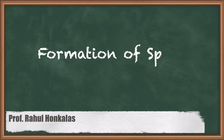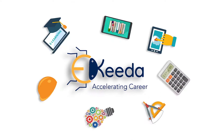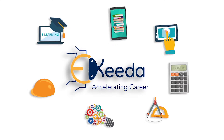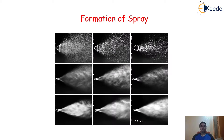Dear friends, today we are going to discuss the formation of spray. In the last video, we discussed about the nozzle and the different types of nozzle. We came to know there are different types like single hole, multi hole, pintle and pintox. In every case, the fuel is injected inside the engine cylinder through the injector nozzle and it comes in the form of a spray.